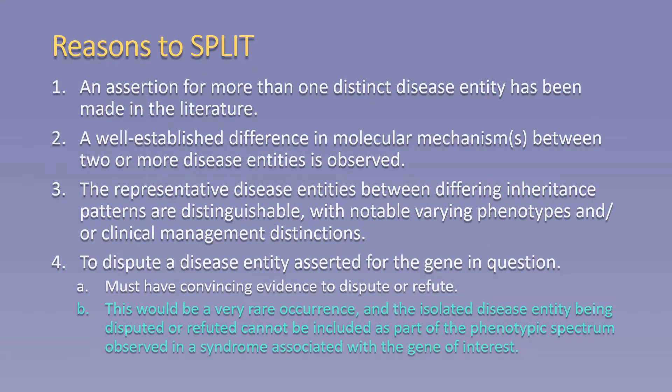Here is an outline of reasons to split a gene disease curation. An assertion for more than one distinct disease entity has been made in the literature. A well-established difference in molecular mechanism between two or more disease entities is observed. The representative disease entities between differing inheritance patterns are distinguishable with notable varying phenotypes or clinical management distinctions. And lastly, to dispute a disease entity asserted for the gene in question — in order to do this, one must have convincing evidence to dispute or refute the claim. This would be a very rare occurrence, and the isolated disease entity being disputed cannot be included as part of the phenotypic spectrum observed in a syndrome associated with the gene of interest.